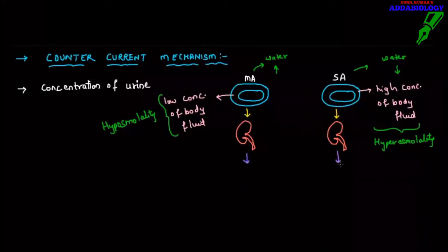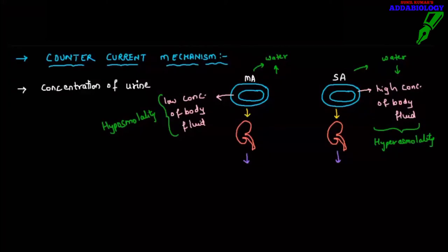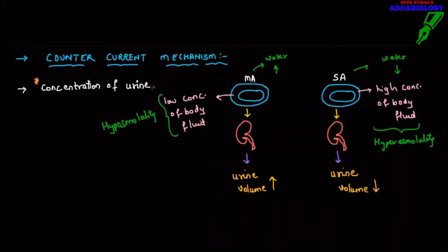When the blood passes into the kidney under both these conditions: for MA, since there is low concentration of body fluid, there is a high amount of water present in the circulatory system — hypo-osmolality is seen. Under this condition there will be no counter current mechanism because already there is high water, so urine volume here will be very high. In the other condition where there is less water, urine volume will decrease, meaning more absorption of water is taking place so that water is added into the circulatory system and body fluid concentration becomes normal.